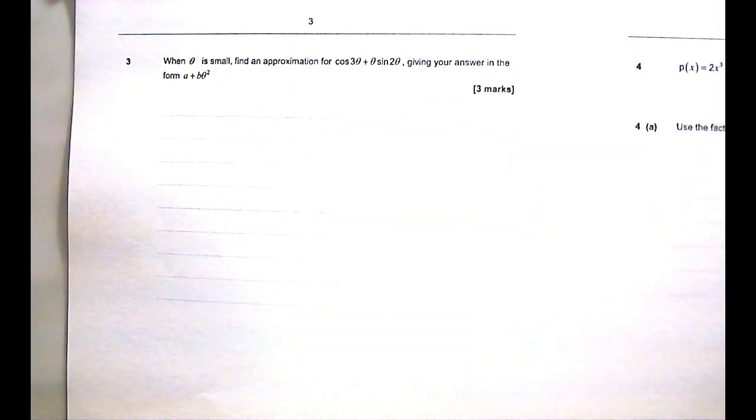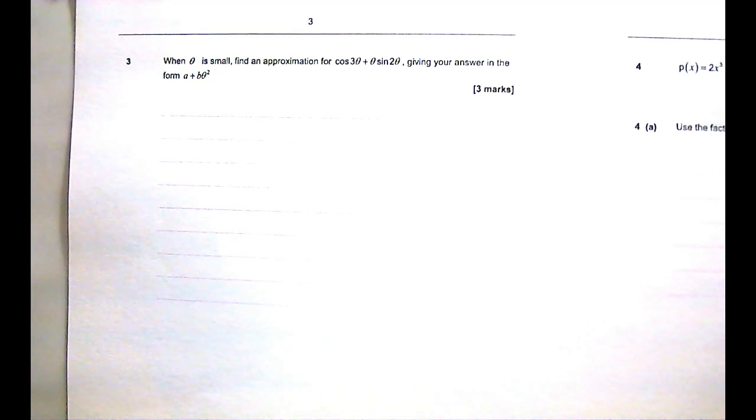The next question is question 3. When theta is small, find an approximation for cos 3 theta plus theta sin 2 theta. Now, I want you to be fast in the exam, so I am going to take you straight to the formula booklet. In the question it says 'find an approximation', meaning you don't have to be exactly correct. The formula sheet tells us something about approximating trig functions.